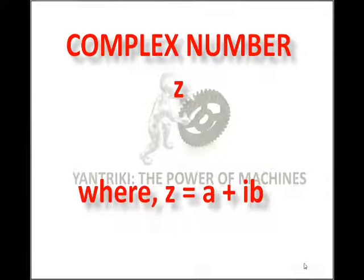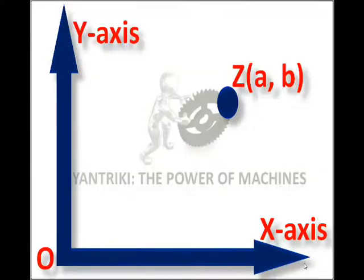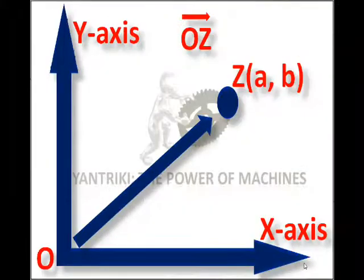In this complex number, A represents the real part and IB represents the imaginary part. Any complex number can be represented graphically as a point Z with coordinates A and B. This representation can also